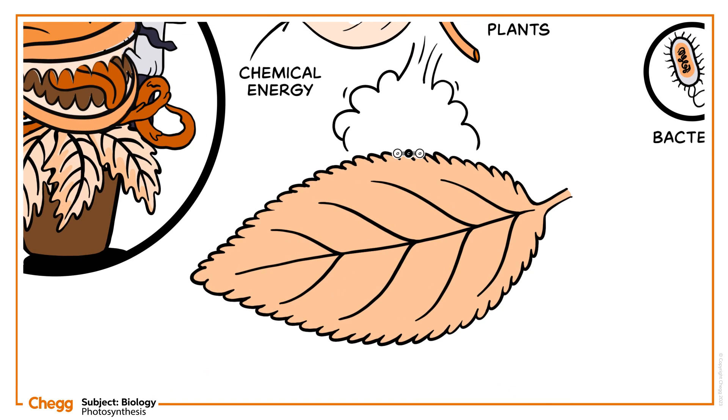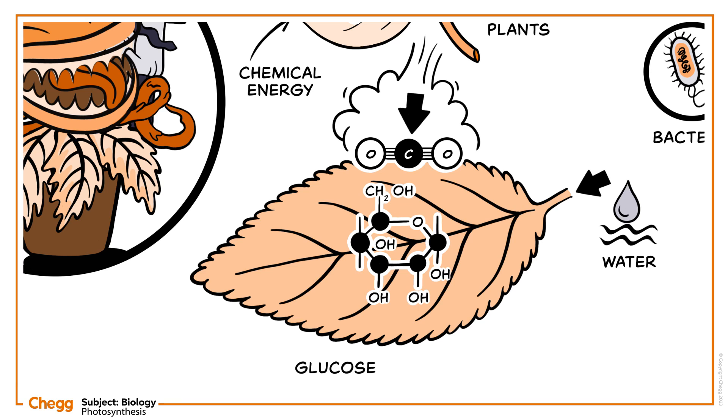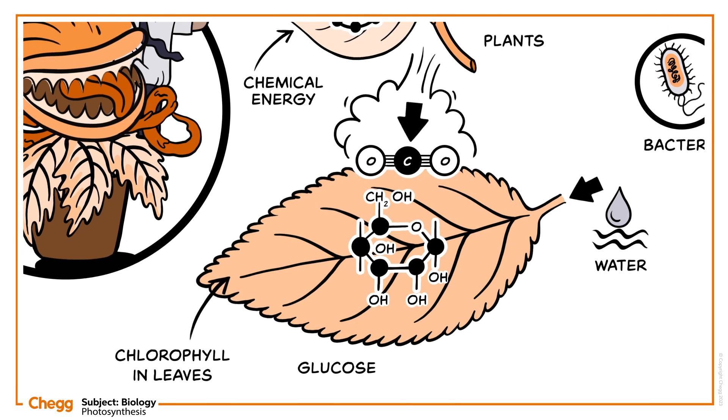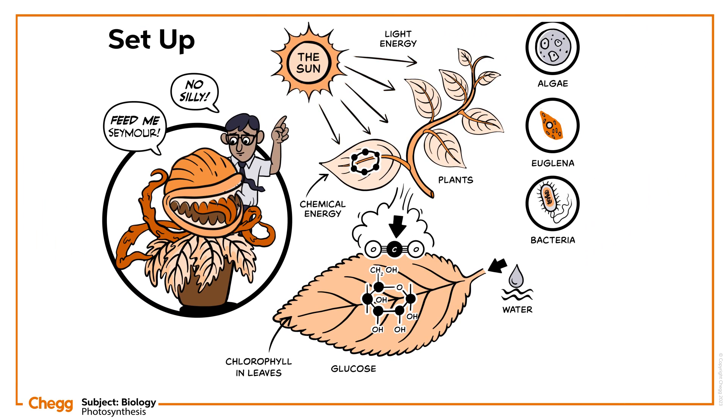The conversion of carbon dioxide and water into glucose takes place inside the chlorophyll, in leaves, in the presence of sunlight. The important part of this process is oxygen, which is released as a by-product.